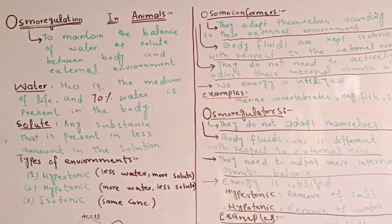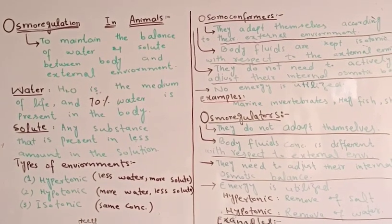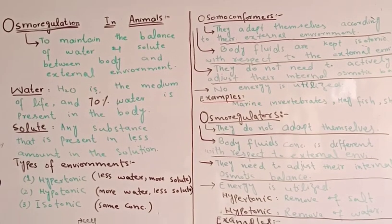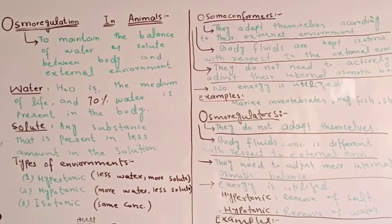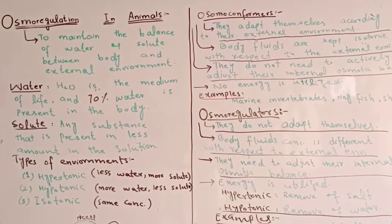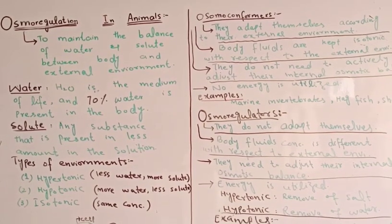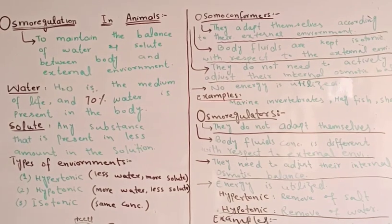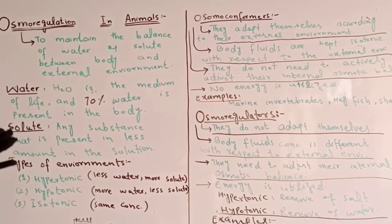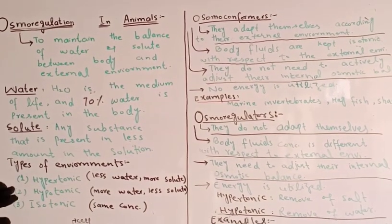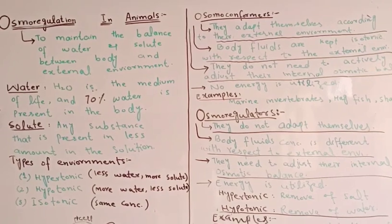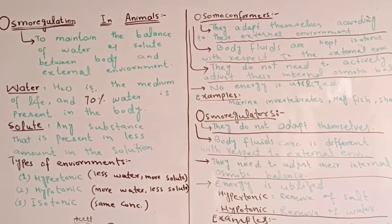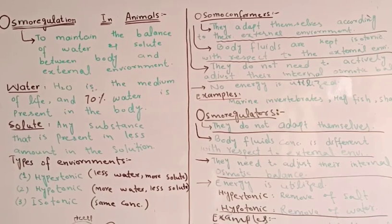What is water? Water is a medium of life. 70% water is present in our body. So it is very important to maintain the critical balance of water between the body and external environment. This critical balance is very important.